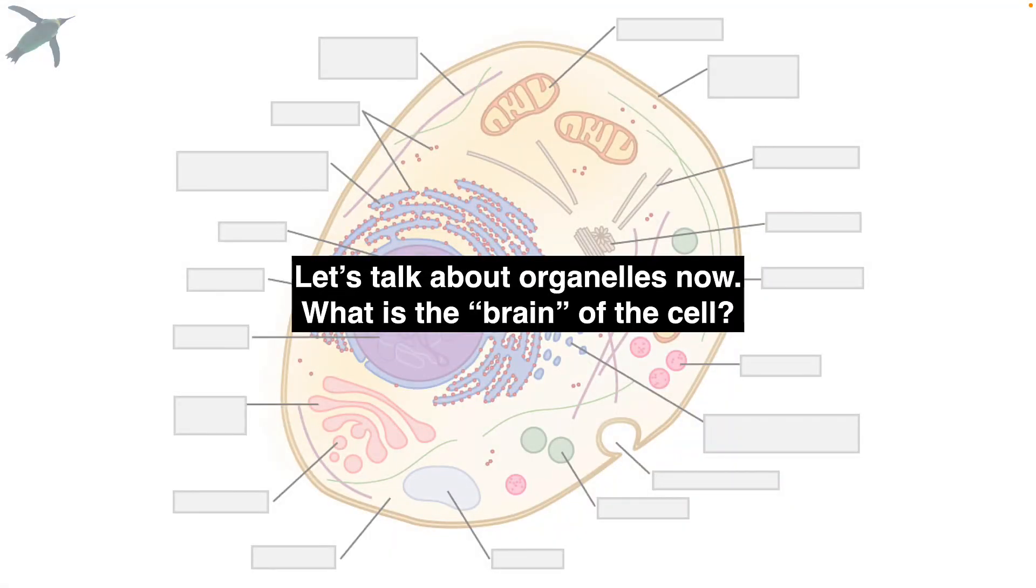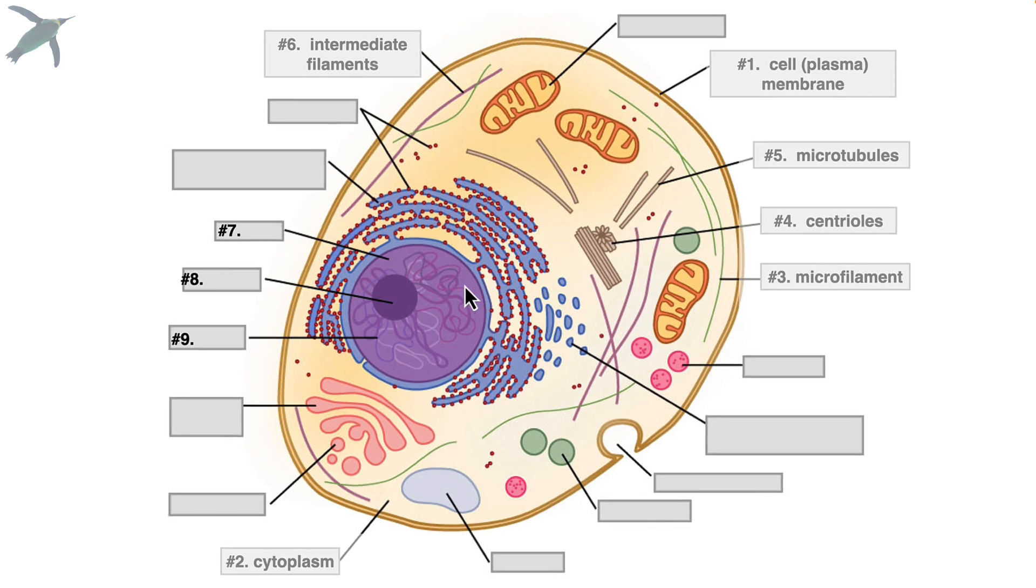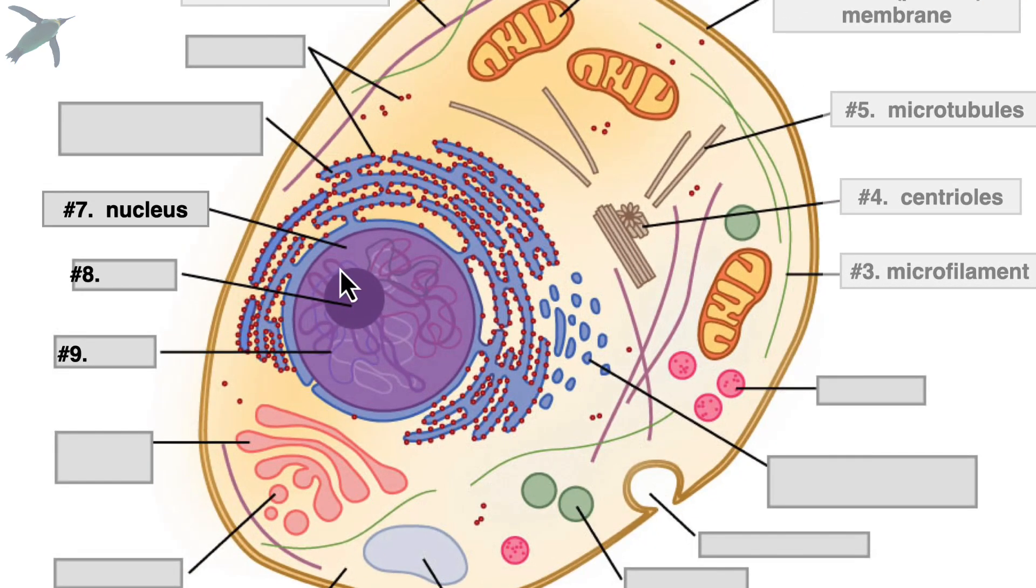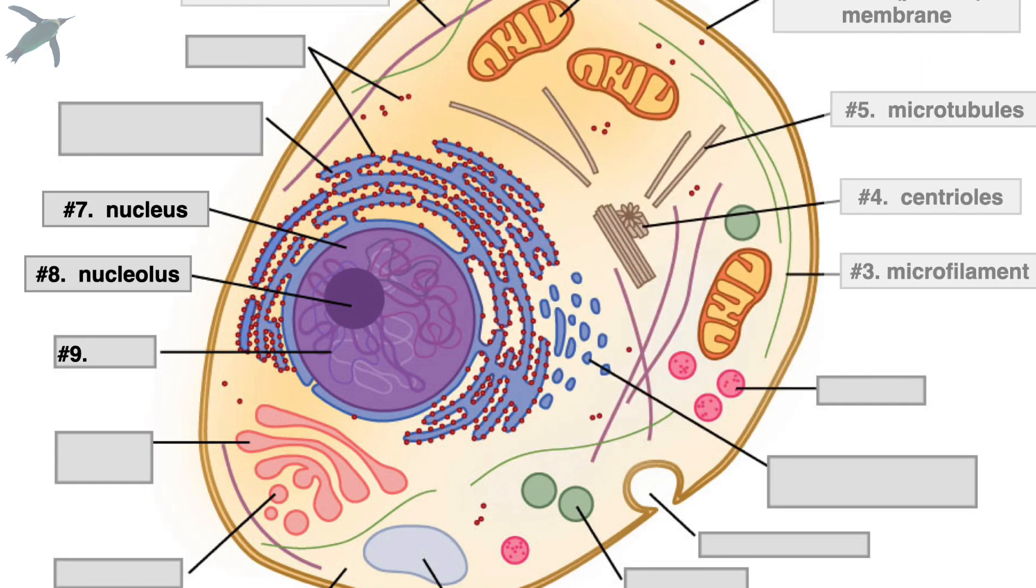So organelle just means little organ. What is the brain of the cell, the headquarters? You probably know this already, so we've got a few things over here. Number seven is this entire structure, the headquarters of the cell, that's the nucleus. Number eight is the slightly darker shaded area, that's the nucleolus. And number nine, that looks kind of like spaghetti, that's chromatin. So let's talk about those.